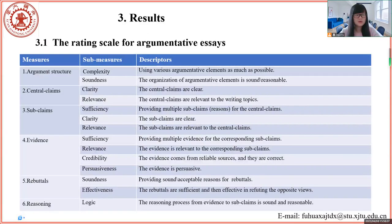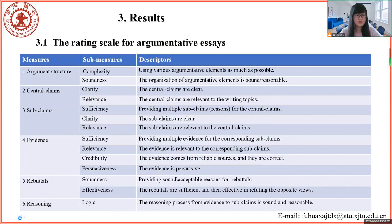The developed rating scale contains six dimensions and their corresponding quality requirements. For example, argument structure should be complex and sound. Central claims should be clear and relevant to the writing topics. Subclaims should be sufficient, clear, and relevant to central claims.